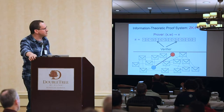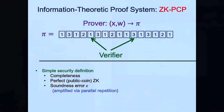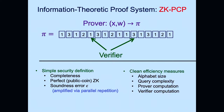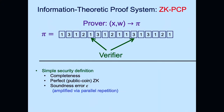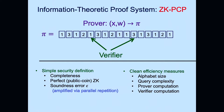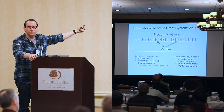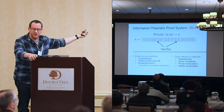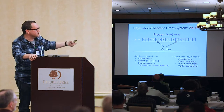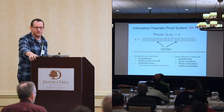This proof system has a very simple security definition — everything is information-theoretic. Completeness, perfect zero-knowledge, public coin, and soundness error can be analyzed precisely. Soundness amplification works cleanly: use independent copies of π and independent queries. We can ask very precise questions about efficiency: smaller alphabet, number of queries needed, trade-offs between soundness and queries and alphabet size. The crypto compiler part — the difficult aspect of GMW — can then be abstracted away separately.